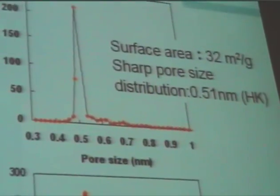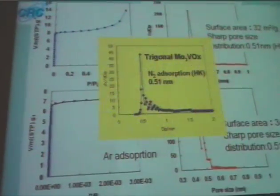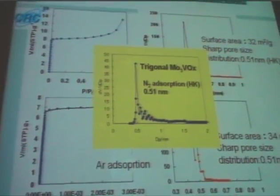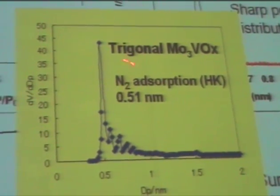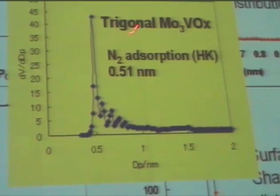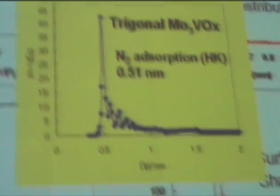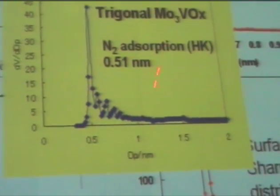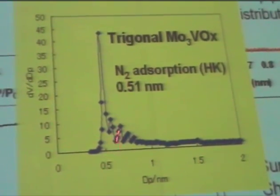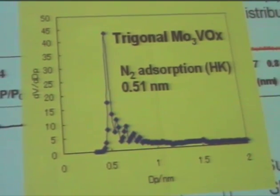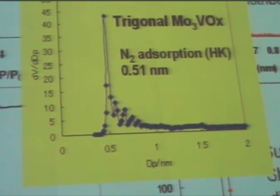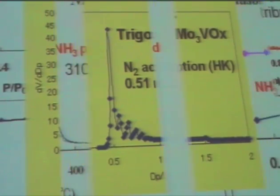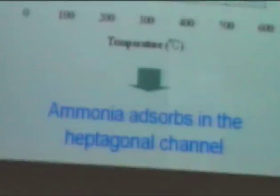Here again, looking at the argon adsorption in the same data — so it is proof that the material has about a 0.5 nanometer, almost uniform pore. In this case, the standard material shows some distribution, probably due to disorders and defects in the material.